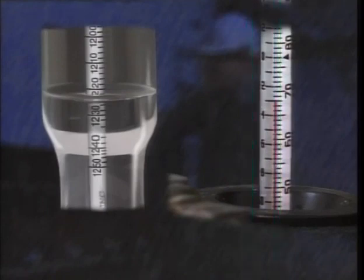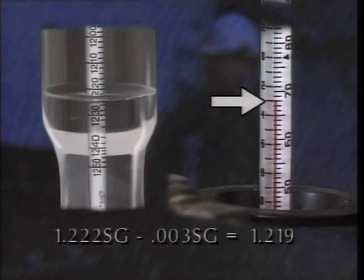In this example, the electrolyte temperature is 68 degrees Fahrenheit. The correction factor for this temperature is about minus three. So .003 is subtracted from the specific gravity reading of 1.222 for a corrected specific gravity of 1.219. This is the value that is recorded for the cell.